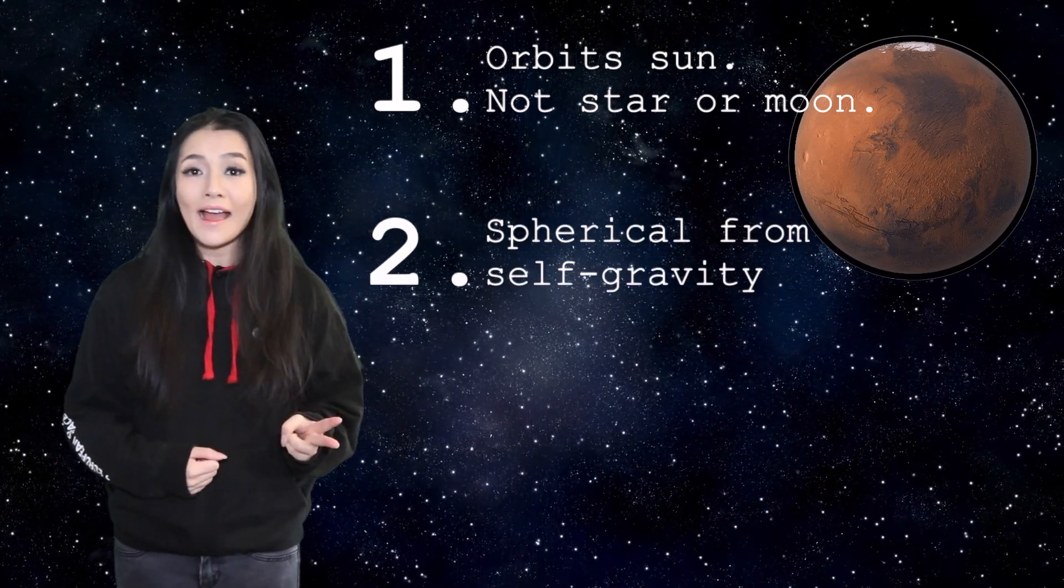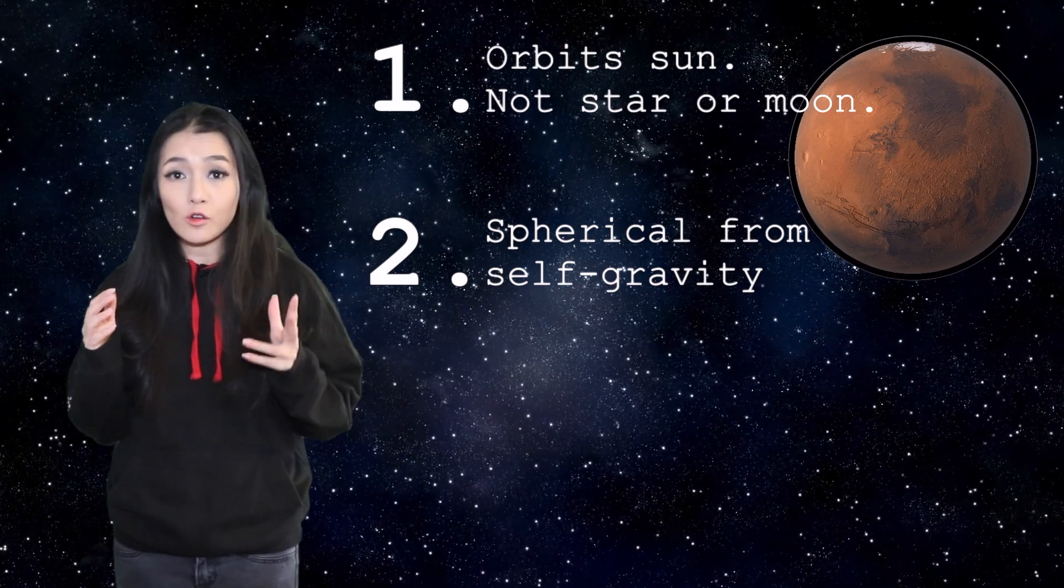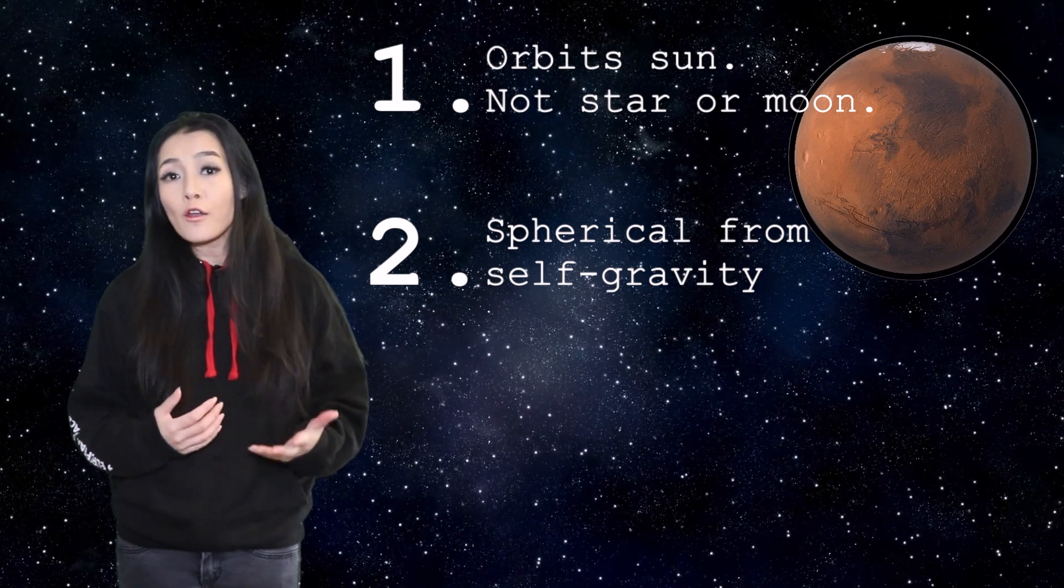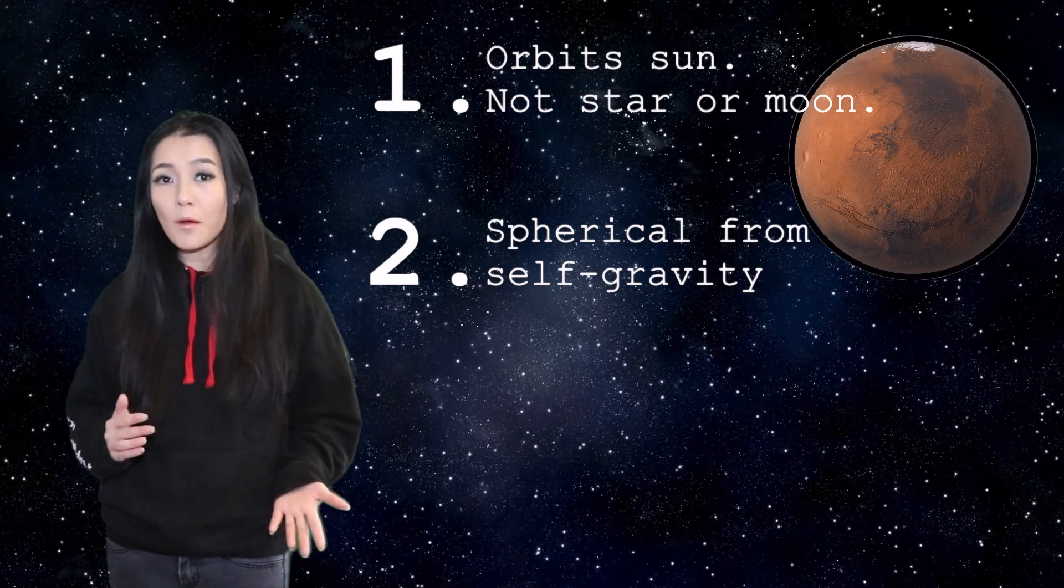Secondly it has to have enough mass so that its own gravity can pull it into a spherical shape. This is typically true of celestial bodies weighing over 500 trillion kilograms and with diameters greater than about 800 kilometers.